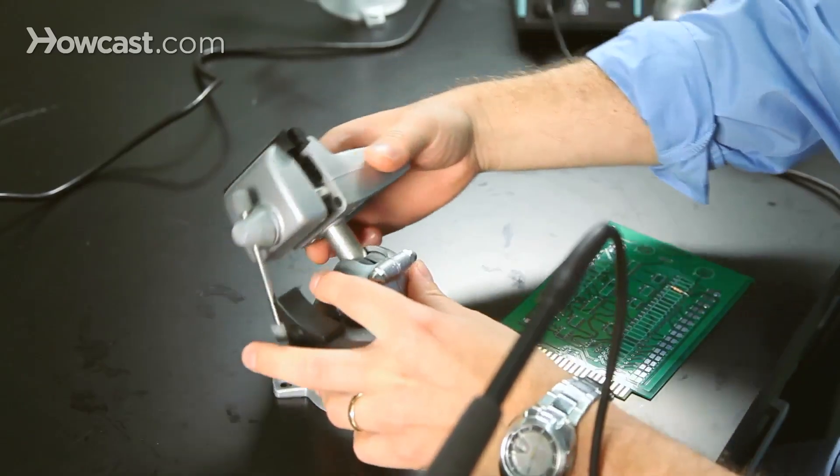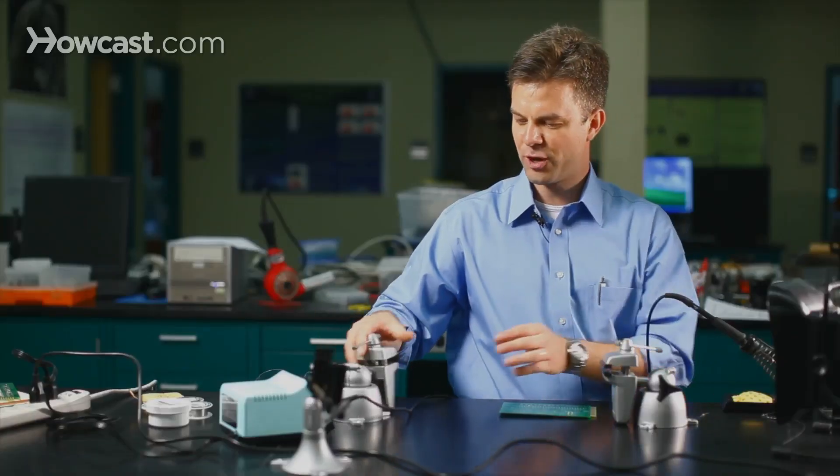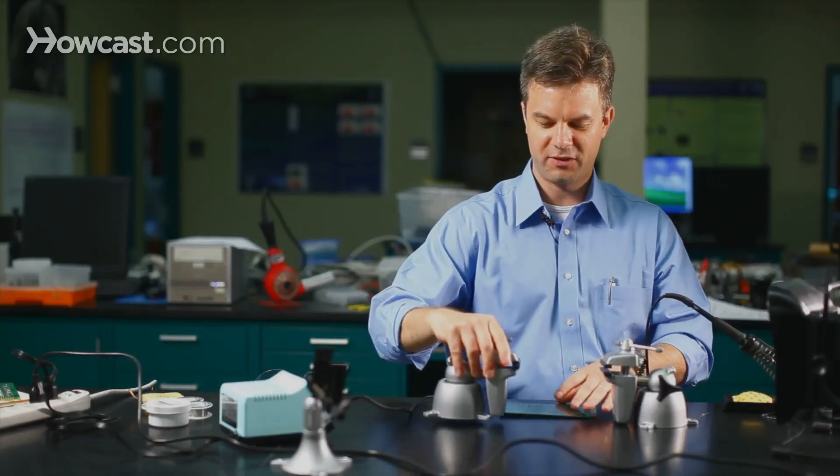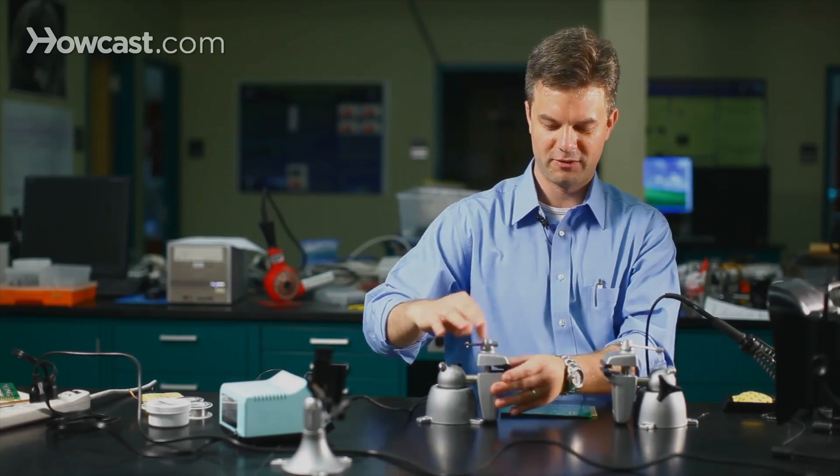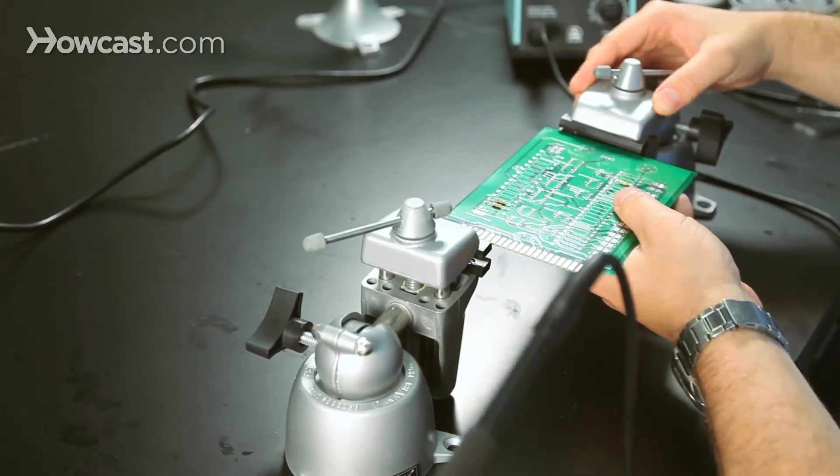And finally, for large parts, you get into the problem where the board begins to flex when you apply pressure. So in that case, it's often helpful to have two vises handy so that you can clamp it from both sides.